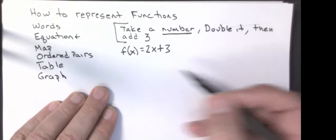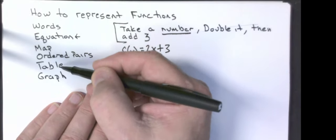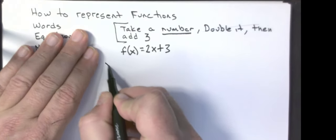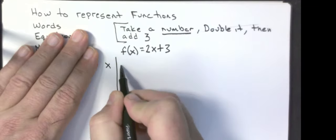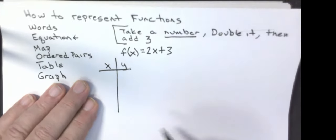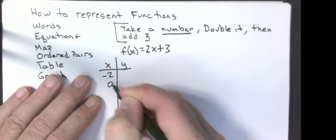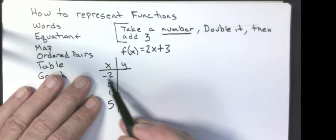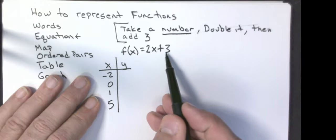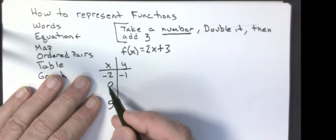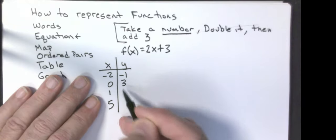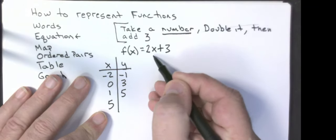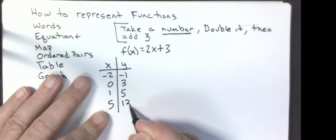Next I'll make a table, because from that I'll come up with the map, graph, and everything else. For the table I take some x-values and compute the y-values. I'll pick four numbers: negative 2, 0, 1, and 5. Negative 2 times 2 is negative 4, plus 3 is negative 1. Zero times 2 is 0, plus 3 is 3. One times 2 is 2, plus 3 is 5. Five times 2 is 10, plus 3 is 13. That gives me my table.